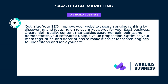Optimize your SEO. Improve your website search engine ranking by discovering and focusing on relevant keywords for your SaaS business. Create high-quality content that tackles customer pain points and demonstrates your software's unique value proposition. Optimize your meta tags, titles, and descriptions to make it easier for search engines to understand and rank your site.